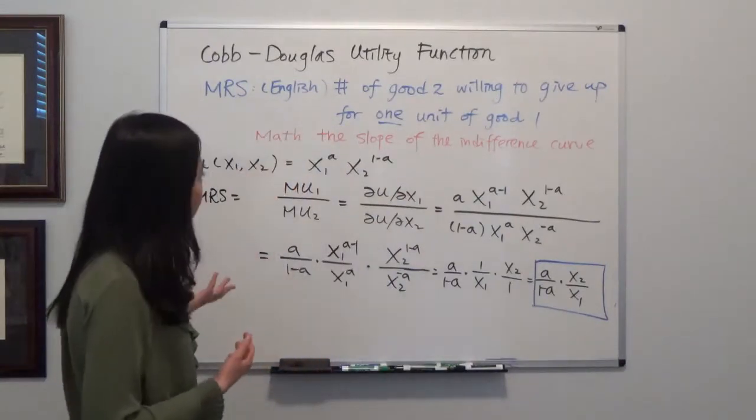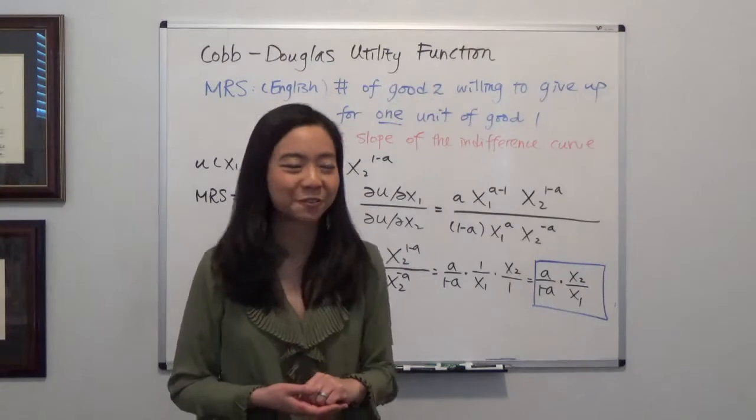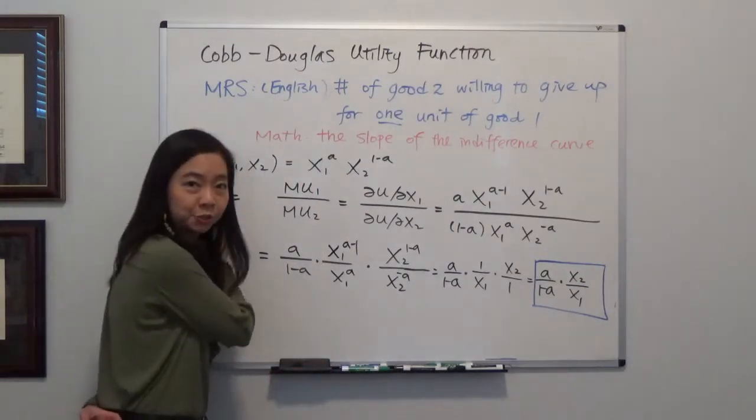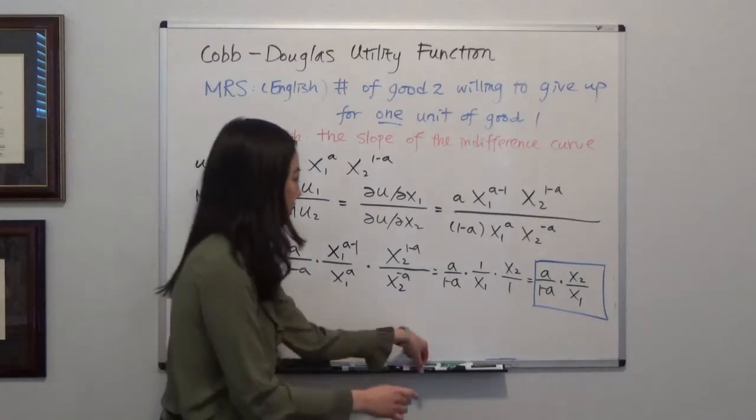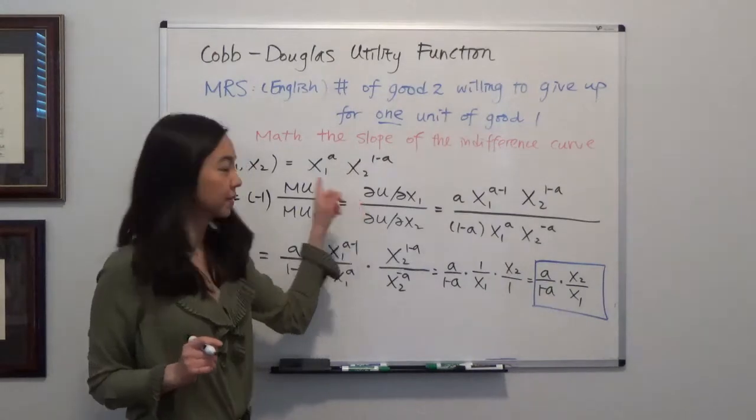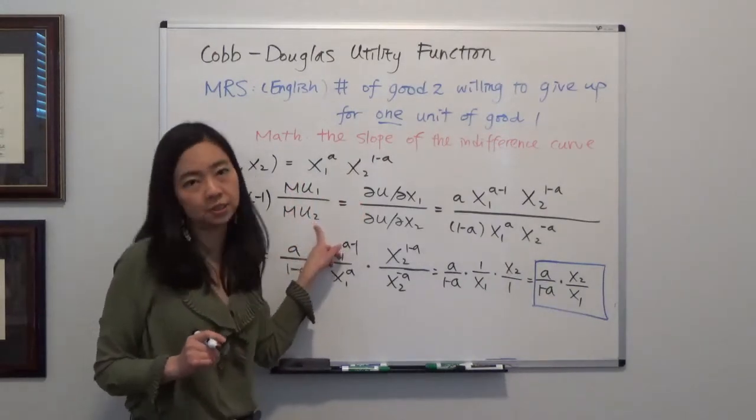And mathematically, it will be the slope of our indifference curve. So how do we do that? We know that marginal rate of substitution is equal to negative one times the marginal utility of good one divided by the marginal utility of good two.